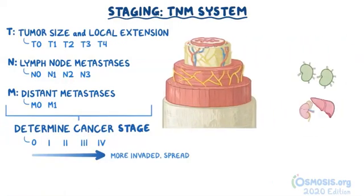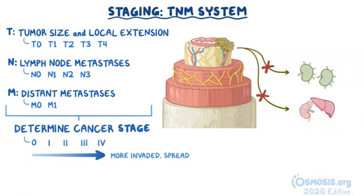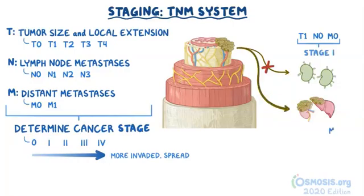For example, if a tumor has invaded the esophageal submucosa but hasn't spread to lymph nodes or distant organs, it's categorized as T1, N0, M0, which falls under stage 1. But if there are any distant metastases, translating as M1, the tumor is considered stage 4, regardless of T and N status.